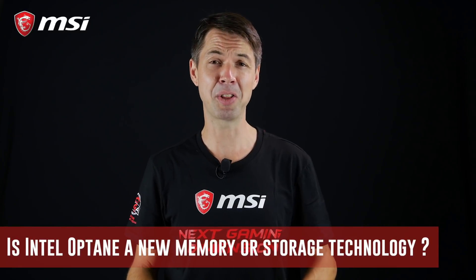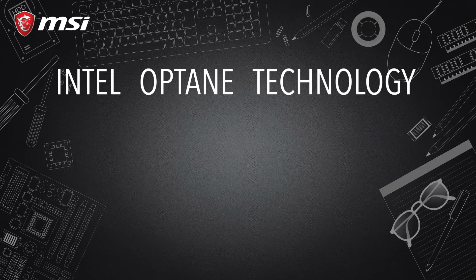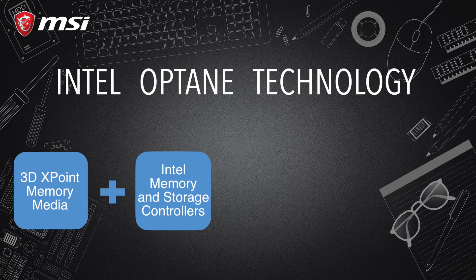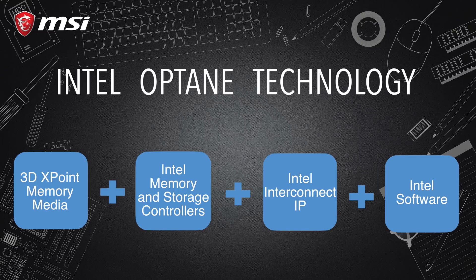Now you're probably thinking, is this another RAM memory or faster storage? Well, it's sort of both. Besides being a 3D Crosspoint memory media, Intel Optane modules combine both Intel Memory and Storage Controller, as well as other building blocks such as Intel Interconnect IP and some Intel software. Together, these building blocks significantly decrease latency and accelerate your systems for workloads that demand large capacity and fast storage.